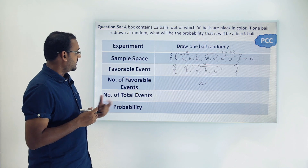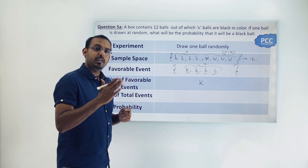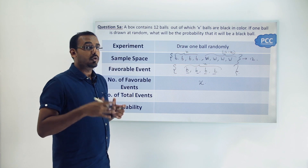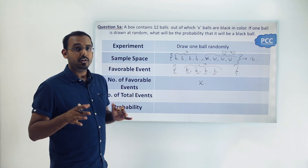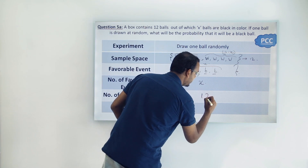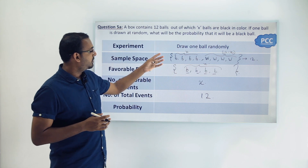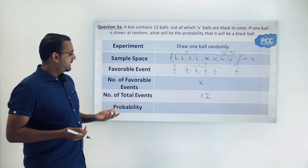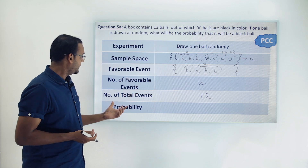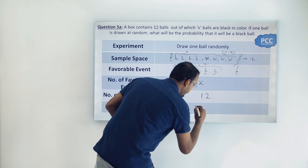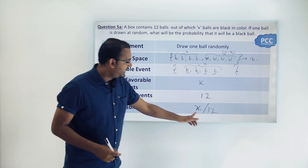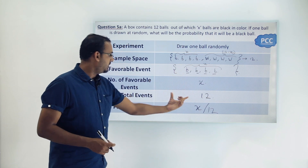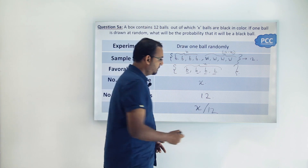Now for the number of total events — we can draw any one of the 12 balls present in the bag. We do not know how many of them are black or white, but there are 12 total balls we can draw. So the number of total events is 12, which is also the total number of elements in the sample space. The probability of drawing a black ball is therefore x divided by 12.